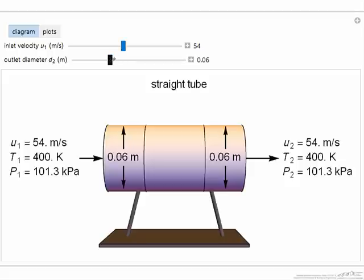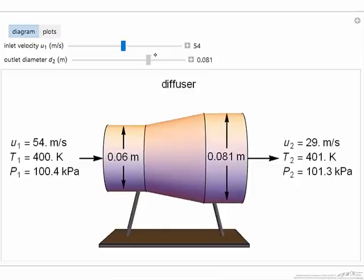If I have the outlet diameter larger, diffuser, now the velocity is lower, the temperature is slightly higher, and notice the pressure is slightly higher. We fix the outlet pressure, that means we calculate the inlet pressure to give these values. This is the diffuser when the outlet diameter is larger.